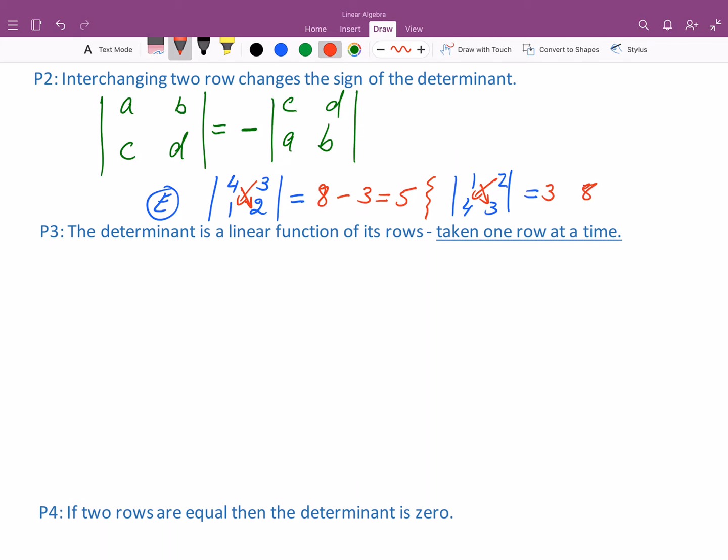And that difference gives you negative 5. And so here what I want you to notice is that the answers are opposites of one another, opposite signs. And that's what this says, and of course it's true for larger determinants, not just for the 2 by 2 case.